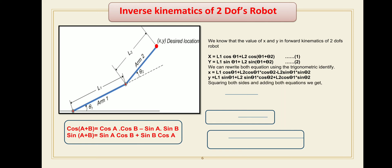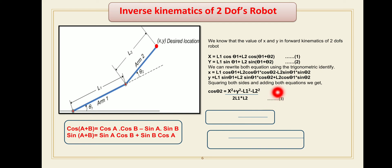The next step is squaring both sides of each equation and adding them together. After squaring and adding both equations, we obtain: cosθ2 = (x² + y² − L1² − L2²) / (2·L1·L2). This is equation number 3, and from this equation you can directly find the angle theta2.